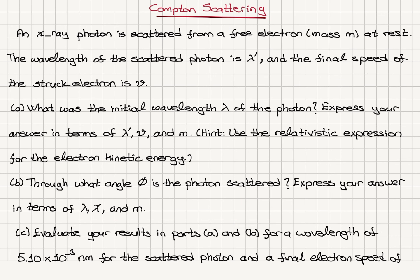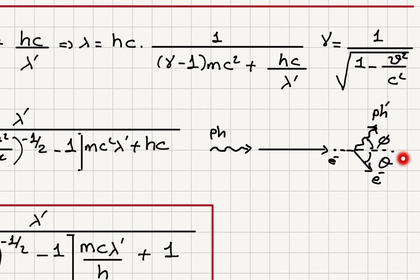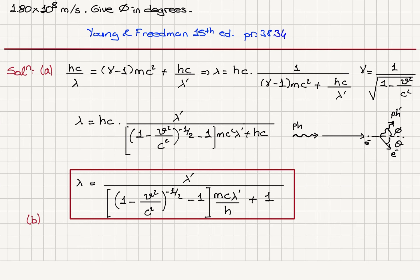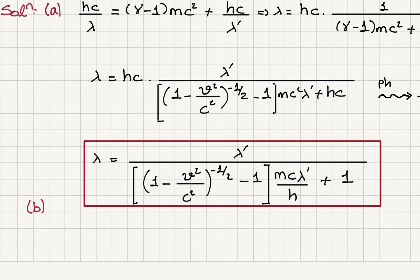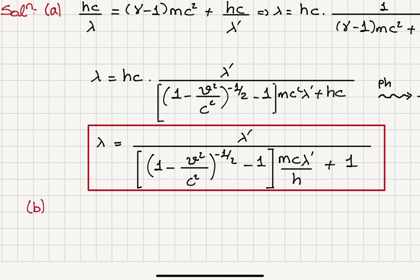Part B: Through what angle phi is the photon scattered? Express your answer in terms of lambda, lambda prime, and m. The photon scatters off the electron at rest at an angle phi with respect to the horizontal, producing a new photon with wavelength lambda prime, while the electron scatters at an angle theta. This is an isolated system, so we have both energy conservation and momentum conservation since there are no external forces.